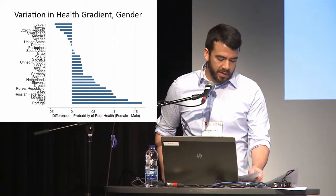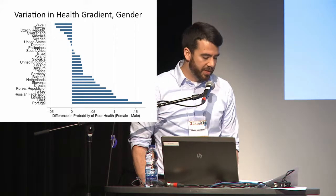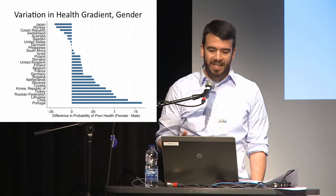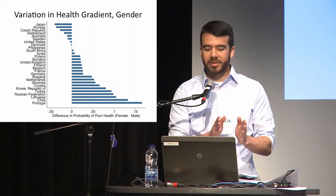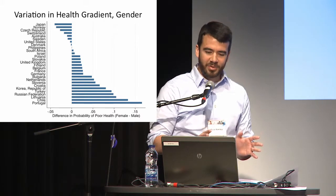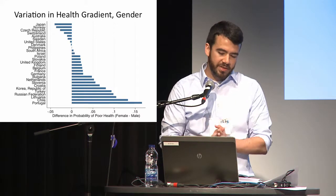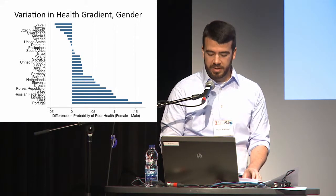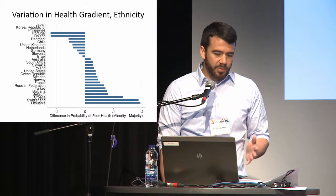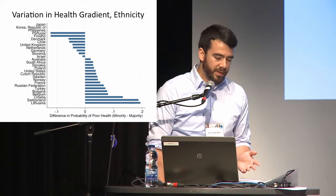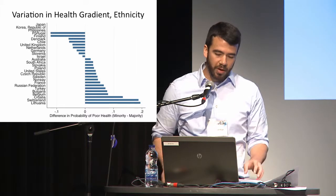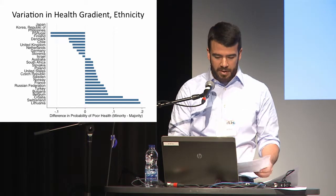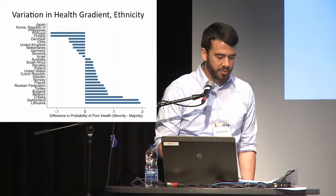For gender, the results are a little different — the direction of the gradient is less clear. In Japan and Norway, women are less likely to report poor health than men, whereas in Chile and Portugal they are much more likely. I intended to include confidence bands on these charts, but a lot of the graphs in the middle range are essentially not significant. Similarly for minority status, there's a pretty large range — in Portugal and Finland, minorities are slightly less likely to report poor health, perhaps reflecting the inclusion of relatively new migrants in the minority coding. But again, we see a large range both in direction and magnitude.